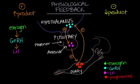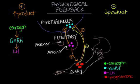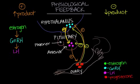Progesterone is secreted from the corpus luteum after ovulation. After ovulation, progesterone will trigger the GnRH production in the hypothalamus to turn off, and that will also trigger LH production in the anterior pituitary to also turn off. This is negative feedback — since the levels of product are becoming too high in the blood, something needs to cause an inhibition of those products so they don't accumulate. That's why progesterone comes in and turns off that positive feedback process, decreasing the products.